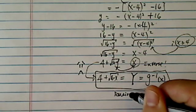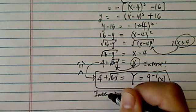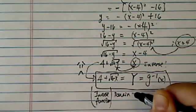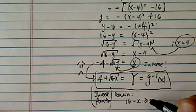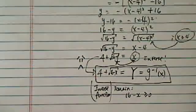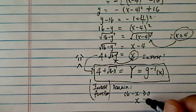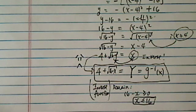Domain for our inverse function here, we have to ensure that 16 - x is larger than 0, so I don't have to take the square root of a negative number. That's saying that x has to be less than 16. So this is the inverse function's domain.